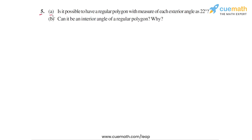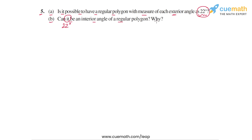In question 5, we have two parts A and B. Part A asks: is it possible to have a regular polygon with each exterior angle measuring 22 degrees? Part B asks: can 22 degrees be an interior angle of a regular polygon? We need to specify the reason for whatever the answer is.